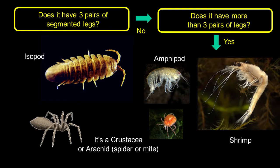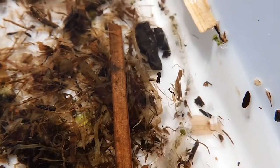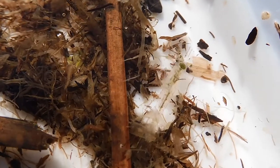What if it doesn't have three pairs of legs? If you're seeing lots of legs — maybe ten or more — then you're almost certainly talking about some sort of crustacea, a shrimp or amphipod. If it's got four pairs of legs, then it's an arachnid — a spider or a mite or something like that.